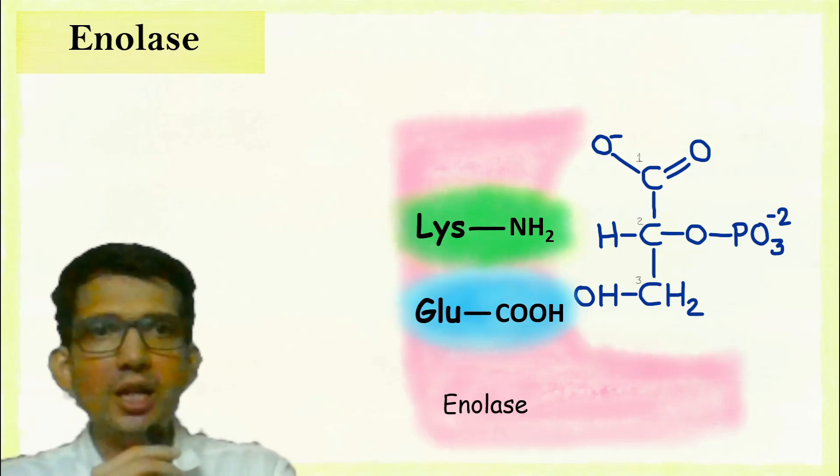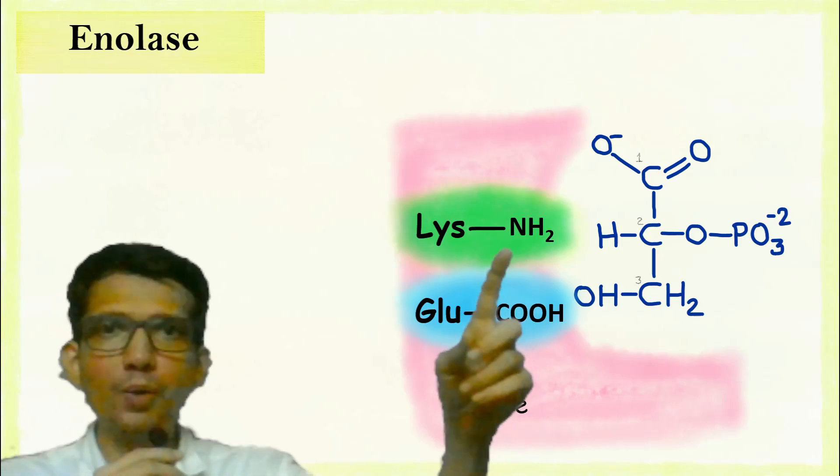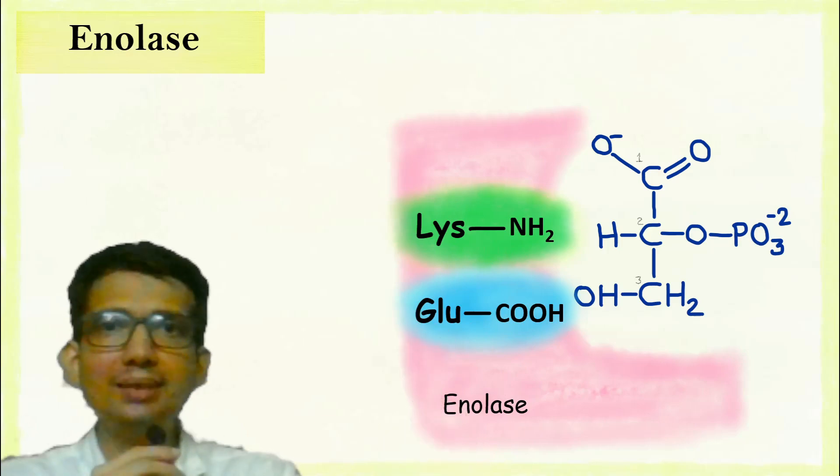The active site of enolase has the amino acid lysine and glutamic acid.